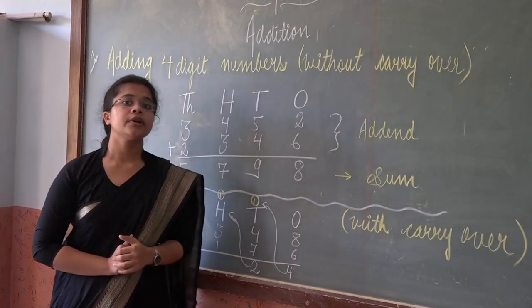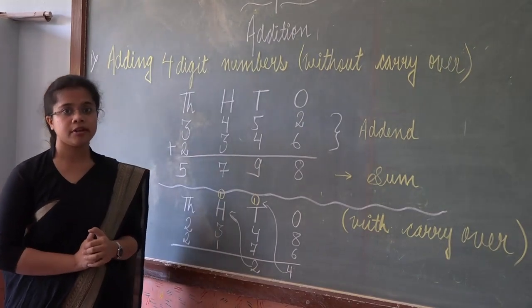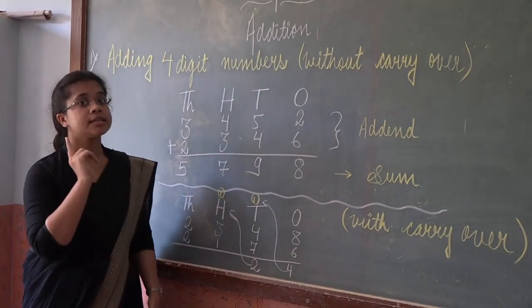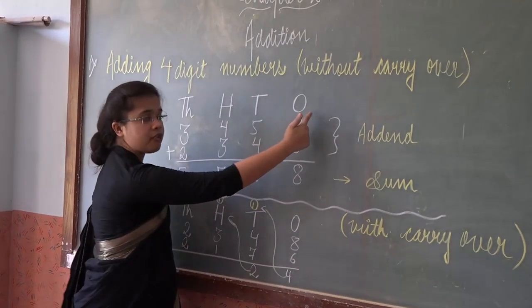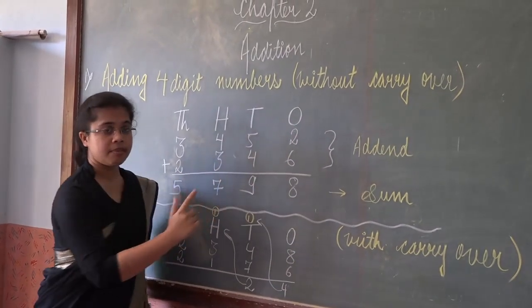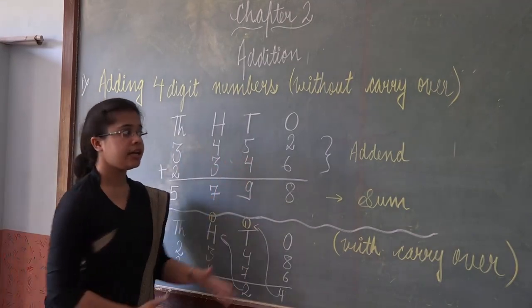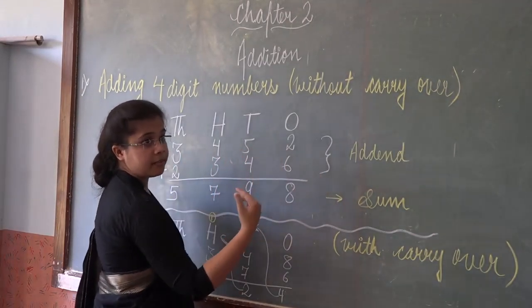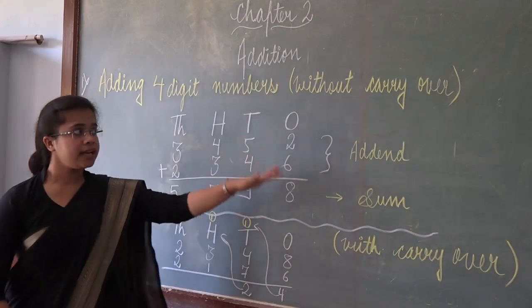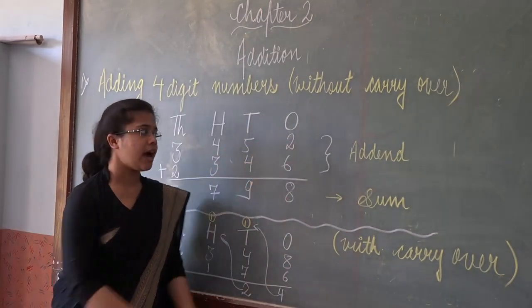First thing or the most important thing that you need to keep it in your mind is always start addition from one's place. Always remember never start it from this side. Always start it from one's place. It means from your right hand side. So addition without carrying.